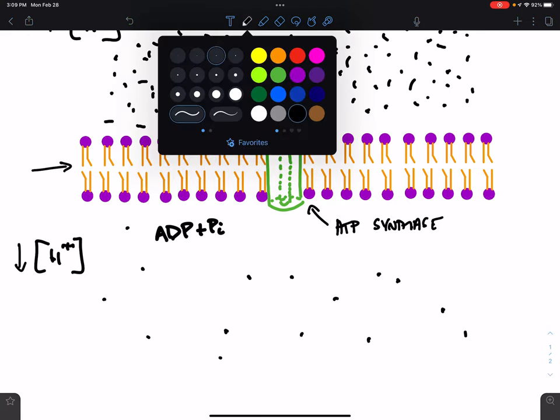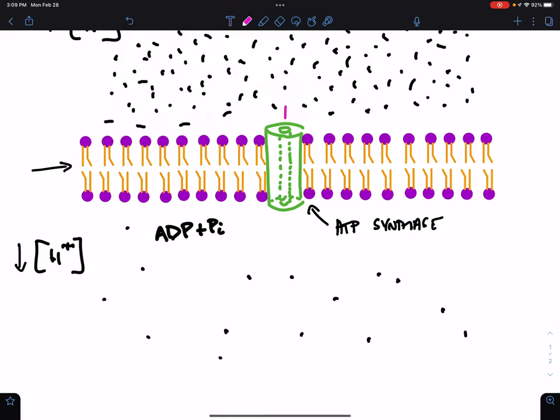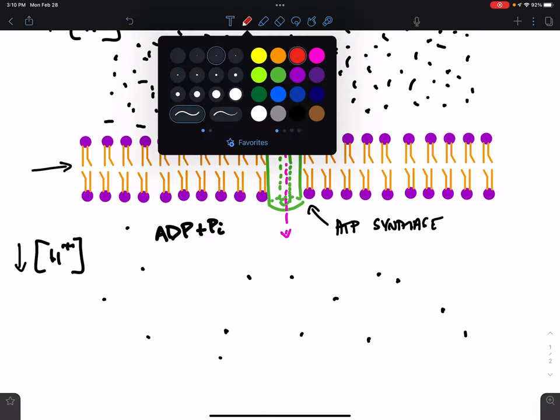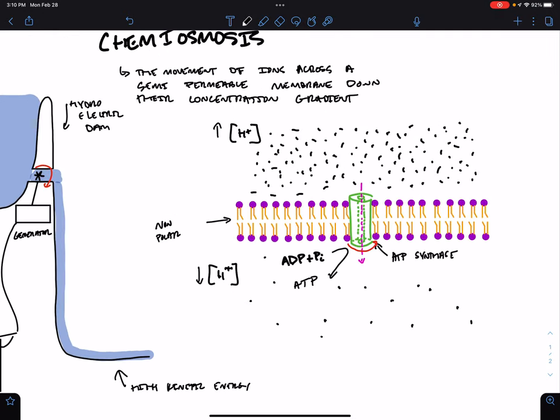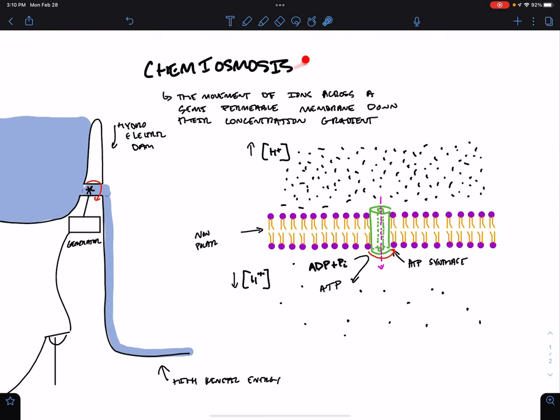And yes, you guessed it, it is the enzyme that creates ATP from ADP and phosphate. So what happens is that as hydrogen is allowed to flow through the molecule or through this protein channel down its concentration gradient from an area of high concentration to low, it causes this enzyme to spin, and that kinetic energy can be used to form a bond between ADP and free phosphate to form ATP. And that's how ATP is made.